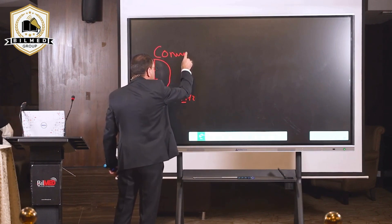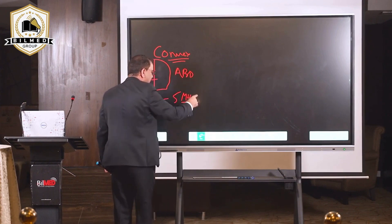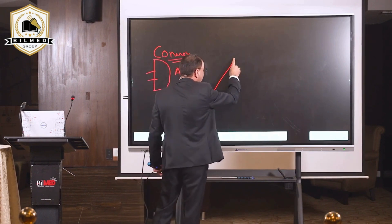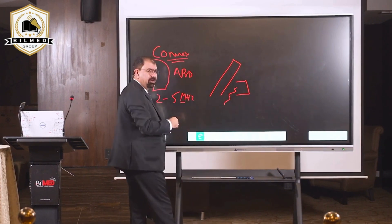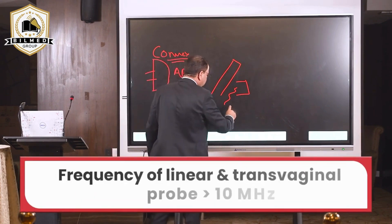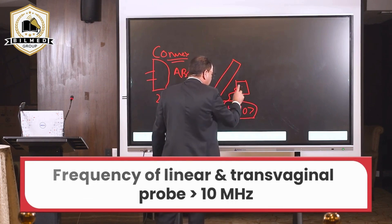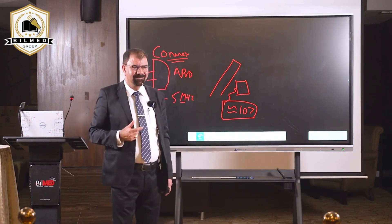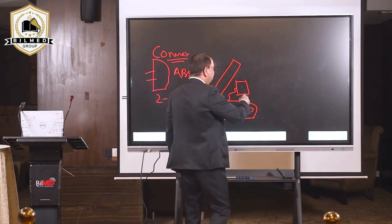But in a linear or TVS probe, how much is the frequency? About 10 MHz and more. Now, if I put this probe onto my abdomen, can I see the gallbladder? No. Why? Here comes the penetration issue.